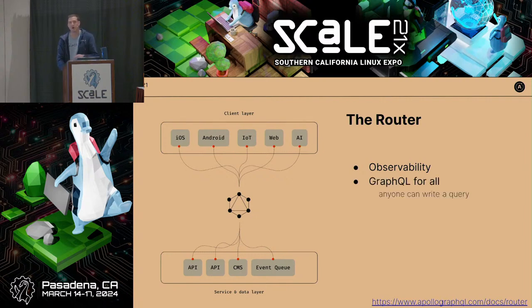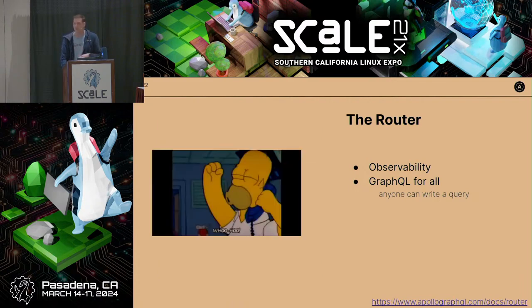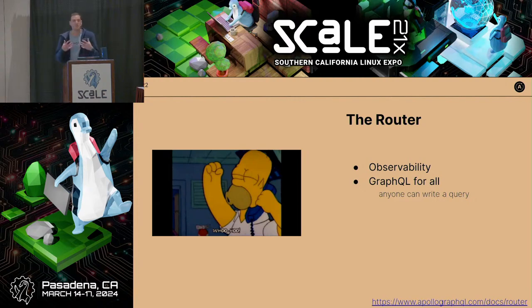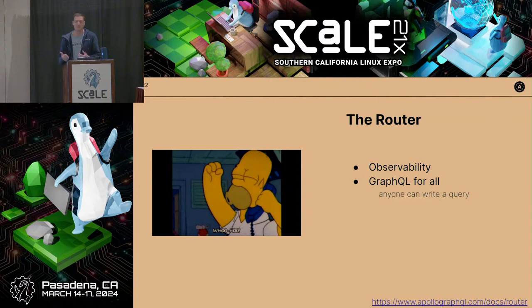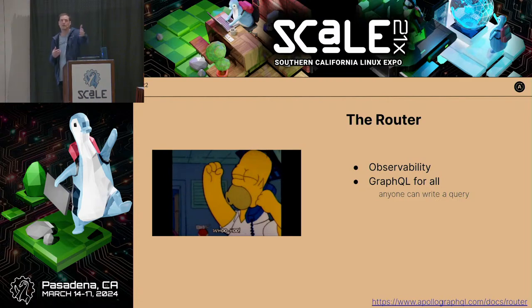The graph router sits in between our services and applications, and everything flows through the contract — our schema. We get observability at that top layer. It also provides GraphQL for all — anyone can write a query. It may be a new thing at first, but anyone can write a GraphQL query. If I think about REST APIs, I'd use Postman, which works for developers but not for a PM or PMM. With GraphQL, it's a portal that enables everyone.